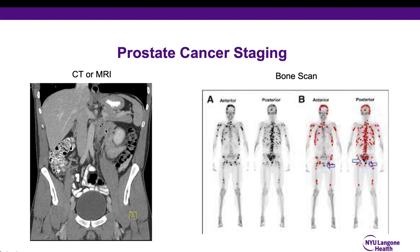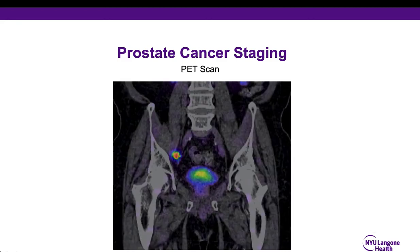Here is an example of a CT scan with a visible lymph node, and this is another example, this time of a bone scan demonstrating spread of prostate cancer to the bones. There are currently several PET scans which are in use and coming down the line, which will be very useful to determine whether or not prostate cancer has spread beyond the prostate or has recurred following primary prostate cancer treatment. These include both Axumin PET scans as well as a PSMA PET scan.